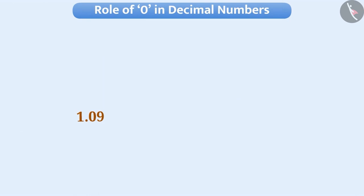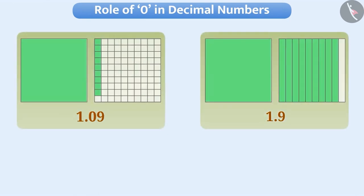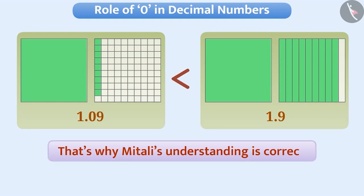From the representation of 1.09 and 1.9, it is clear that 1.09 is smaller than 1.9. Therefore, Mitali's understanding is correct.